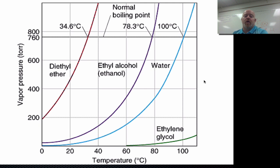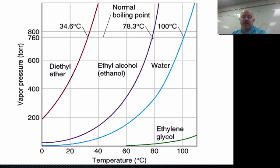Here's a graph of boiling points of different substances. The y-axis shows vapor pressure in Torr or millimeters of mercury. Typical atmospheric pressure is about 760 mmHg or 760 Torr. On a normal day in an open system, we can boil diethyl ether at 34.6°C, ethanol boils at about 78.3°C, and water boils at about 100°C. The point at which water boils is when its vapor pressure equals atmospheric pressure — about 760 mmHg.